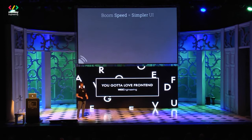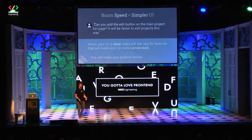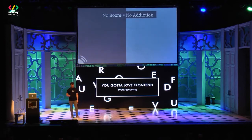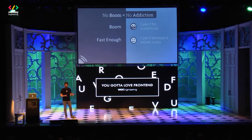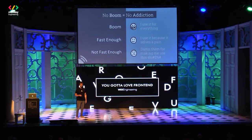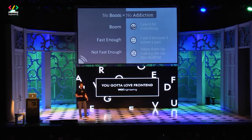When you achieve boom speed, your UI will be simpler. How many times have you heard users request: 'can you move this button to the main screen?' They ask for this not because they think it will improve your product, but because the product is slow. Once the product is slow, people ask you to add more buttons to certain pages, making your UI more condensed and your product worse. When you achieve boom performance, you create addiction to your product. If it's fast enough, they'll use it for everything. But if it's not fast enough, they'll say 'why are they making me use this?' — you know, stuff like Salesforce and Jira that you have to work with but every time you think: why is it so slow?